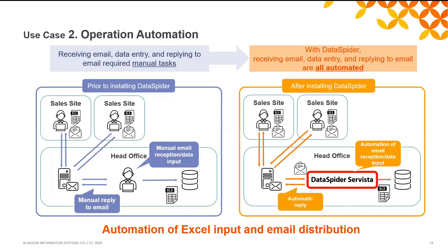Use case two: operation automation. This use case explains how to automate manual tasks, which are mainly file operations. Even with various available tools to manage data, it is still common to use Excel for data management and collection. Previously, the Excel data sent from each cell site was manually registered to the database by staff in the head office. However, this has the risk of human error when entering data. With DataSpider installed, after each cell site sends emails with Excel files attached, DataSpider automatically detects the emails. After which, DataSpider automatically performs all operations, including reading the data in the attached Excel file, registering the data into the database, and even sending an email notification upon completion.